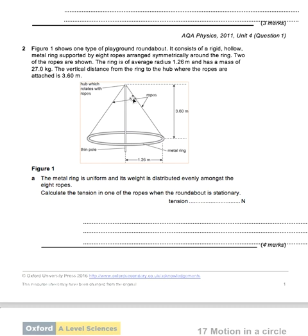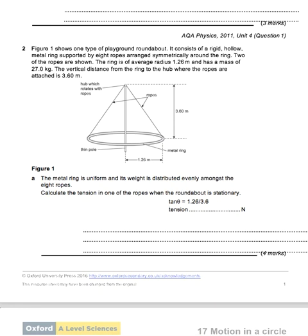I know this angle is related to this distance and this distance. I know the vertical to be 3.6, the horizontal to be 1.26. So I know tan theta, opposite over adjacent, is 1.26 divided by 3.6.